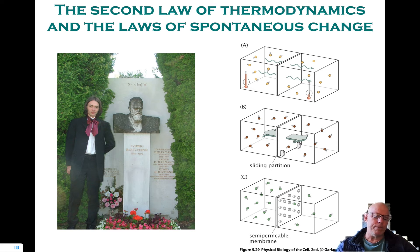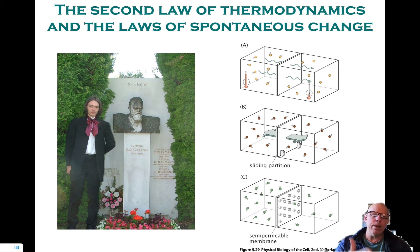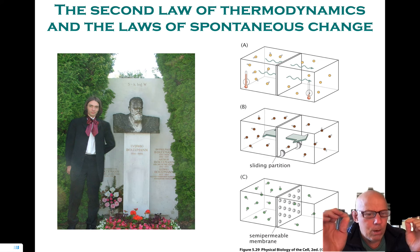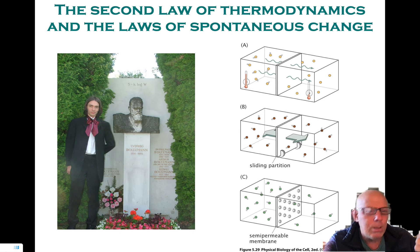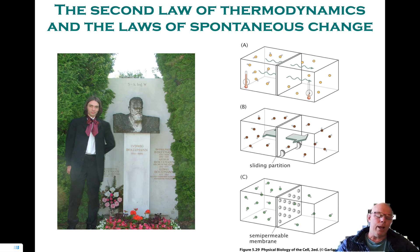Let's look at part B for starters. Let's say you have a partition between the two sides, and the partition has wheels, but for the moment the wheels are locked. Now I remove the brake. What we know will happen is that wall will move until a particular quantity on the two sides is equal. What particular quantity? The pressure.